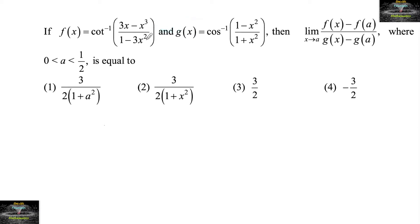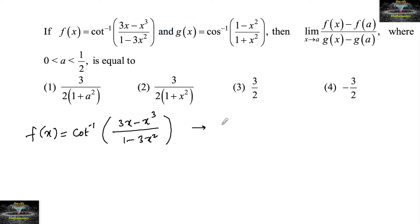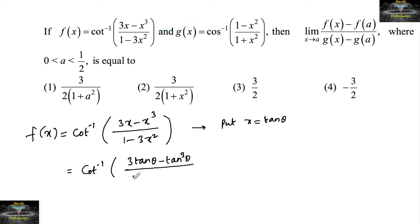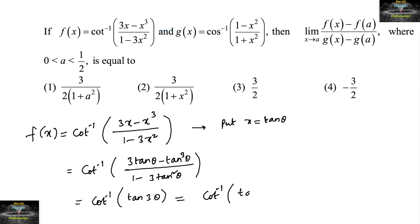Given f(x) = cot⁻¹((3x - x³)/(1 - 3x²)). Put x = tan θ, so we get cot⁻¹((3tan θ - tan³θ)/(1 - 3tan²θ)), which is equal to cot⁻¹(tan 3θ). This can also be written as cot⁻¹(cot(π/2 - 3θ)).